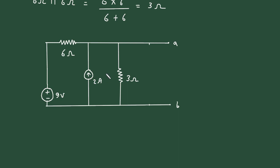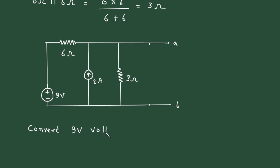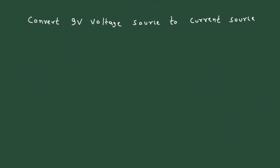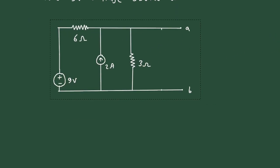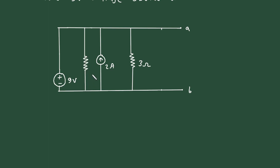Now again we can convert this 9 volt into its equivalent current source. So we will convert the 9 volt voltage source to a current source. If we convert this 9 volt voltage source to a current source, it will be in parallel with this 6 ohm. So first we will erase this 6 ohm and redraw this 6 ohm resistor.